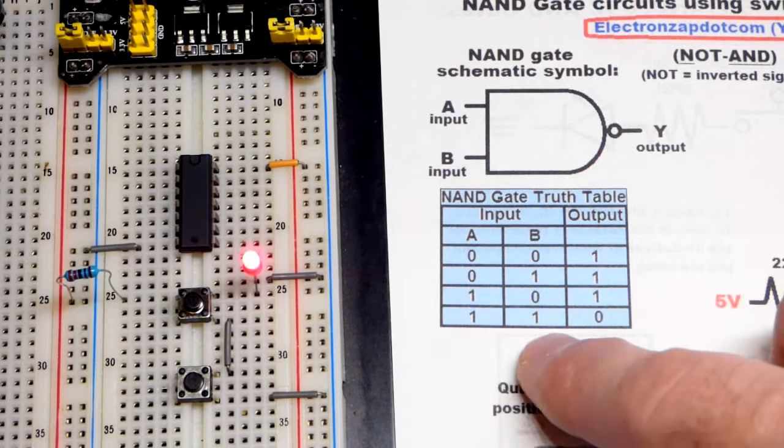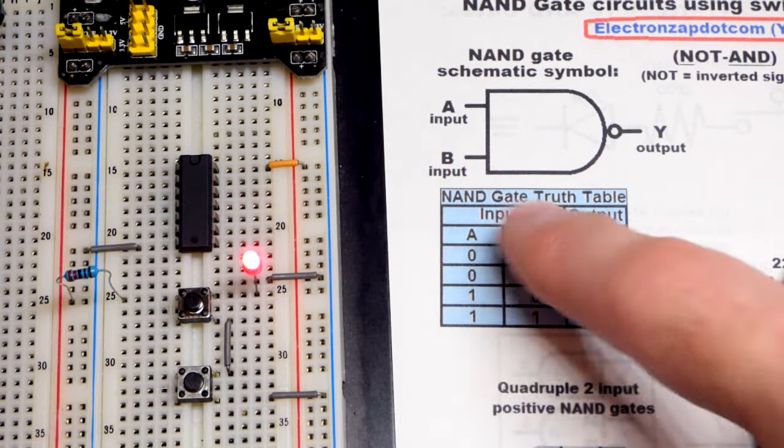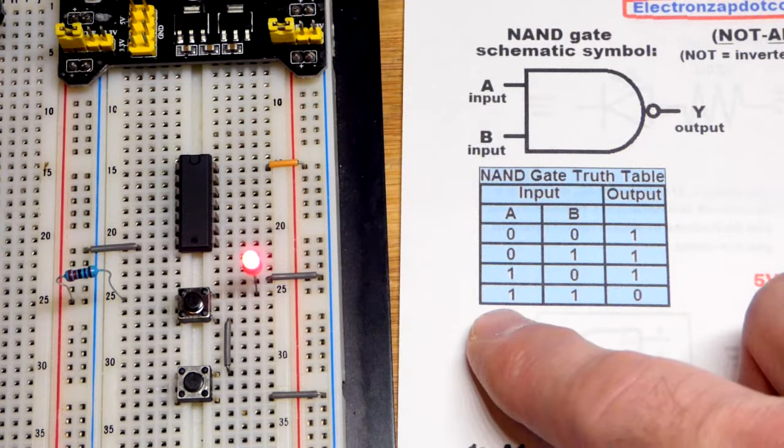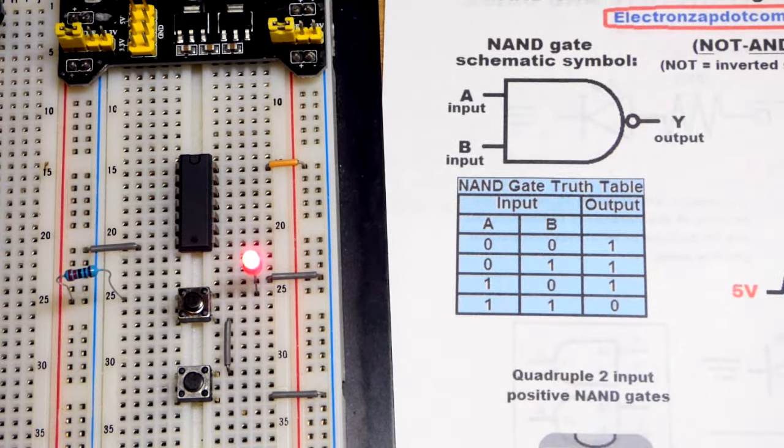So it's the opposite of an AND gate. An AND gate, everything has to be high for the output to be high. Whereas the NAND gate, it's a NOT AND gate or inverted AND gate. It is the opposite. So let's demonstrate that.